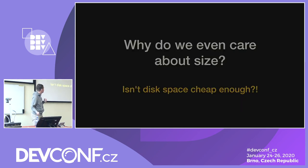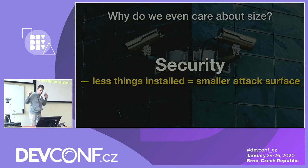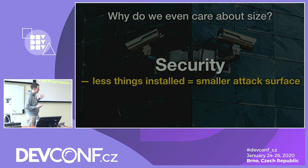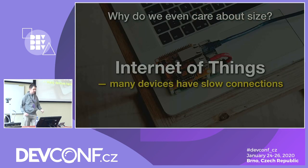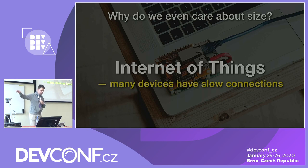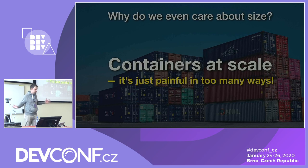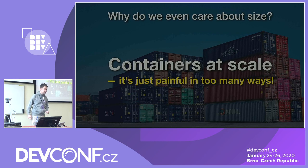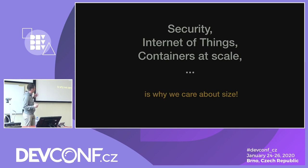So why do we care about size? Isn't space cheap? I think there are three reasons. First, the compulsory security slide: fewer things installed means a smaller attack surface. That's not storage-related at all, but it's a valid reason. Second, the Internet of Things — it's not about disk space; Raspberry Pis and similar devices may be small, but it's really about connection speeds. They often run in the field with very slow connections, so sending updates quickly requires smaller sizes. Third, containers at scale: if you have too many containers and they're too big, it's painful to manage. Making it smaller makes sense even from a storage perspective.